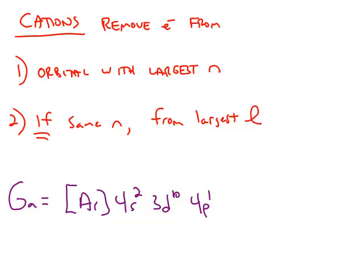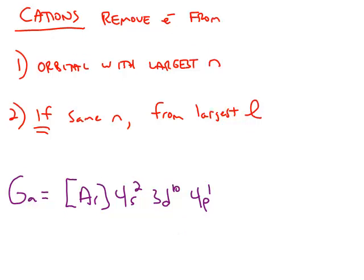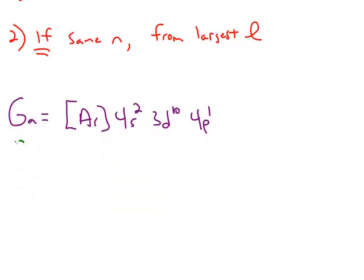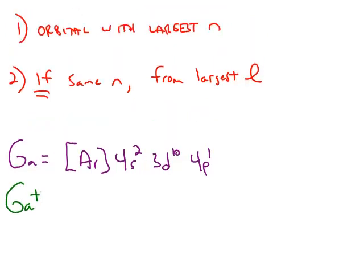So for example, for the neutral gallium atom, we have this spectroscopic notation. If we're going to form a gallium with a positive 1 charge, we choose, by rule number 1, the orbital at the largest value of n. So we have a choice between the 4s and the 4p. Both of those have the quantum number n equal to 4.